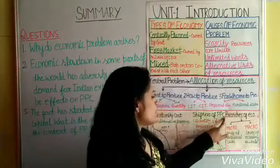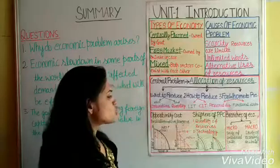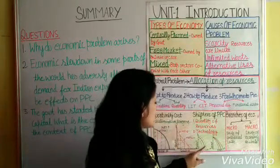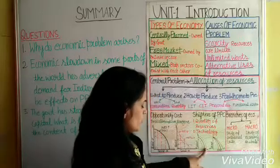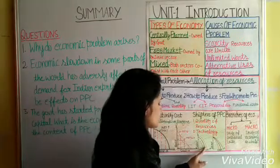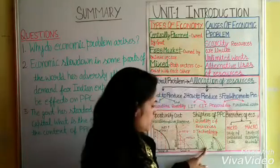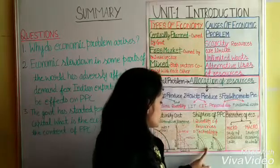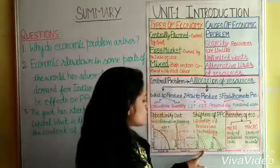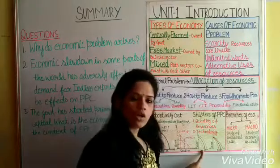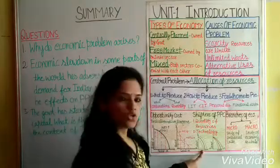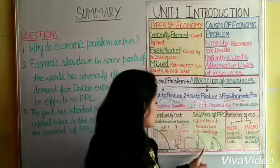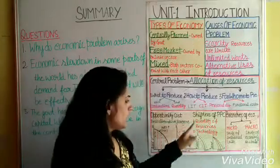Next are the Shifters of PPC. The first is quantity of resources. When quantity of resources increases, it shows an increase in the production capacity of an economy, and in this situation the PPC shifts to the right side. When there is a decrease in resources due to flood, earthquake, or tsunami, the PPC shifts to the left side.